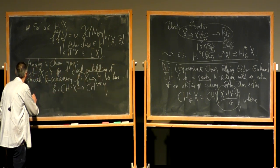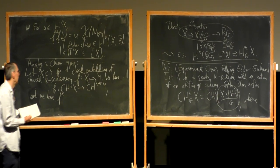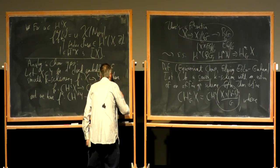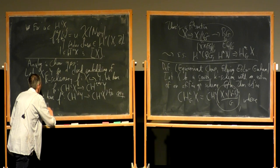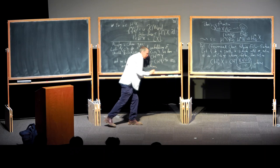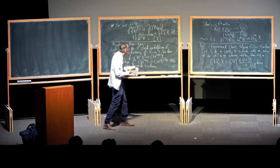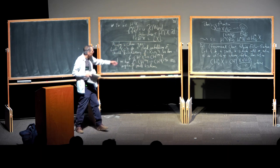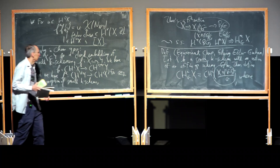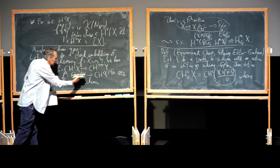Defining the pullback is essentially the same problem as defining the intersection product on Chow groups. In good situations, if an element is represented by a subvariety which meets X transversely, then the pullback is given by the intersection of that subvariety with X. In general, you have to argue that it's equivalent to some cycle that does meet X nicely, do the intersection, and then show that's well-defined.